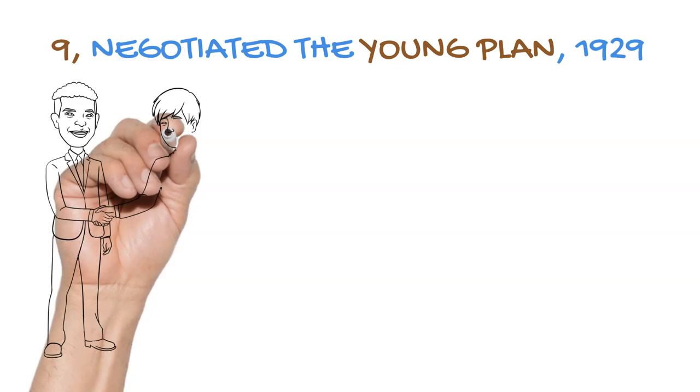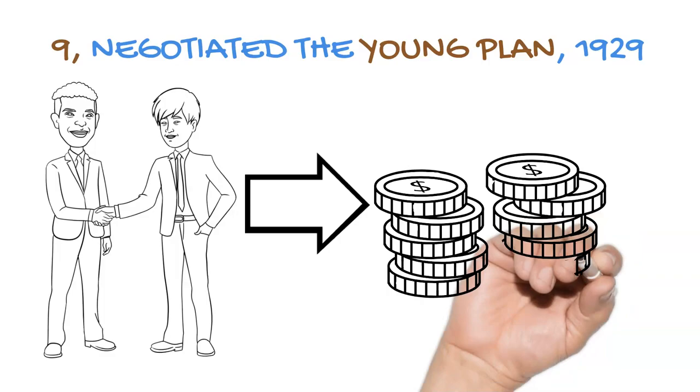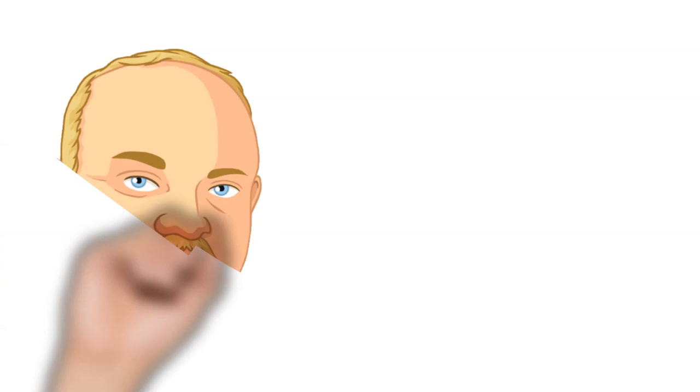One of Stresemann's final acts before he died was to sign the Young Plan in 1929. Much like the Dawes Plan, it reduced the amount of reparations that Germany had to pay and it also provided further loans to the value of 300 million dollars.